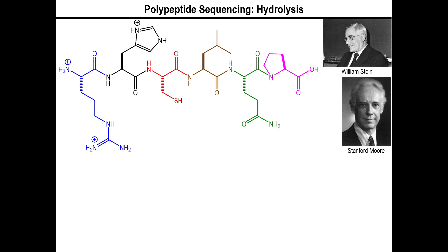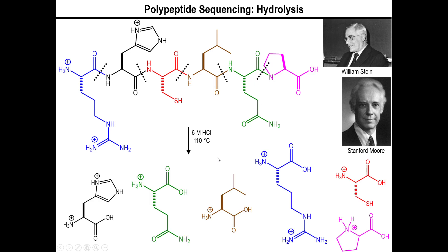To give you an example, for the hexapeptide shown here, the idea was to take your peptide molecule and expose it to harsh conditions — specifically treat it with concentrated HCl at high temperatures. What this ultimately does is break down every single amide bond present in your molecule, breaking the entire peptide into the individual amino acids that were present in that peptide to begin with.